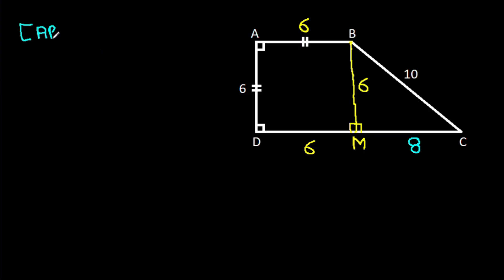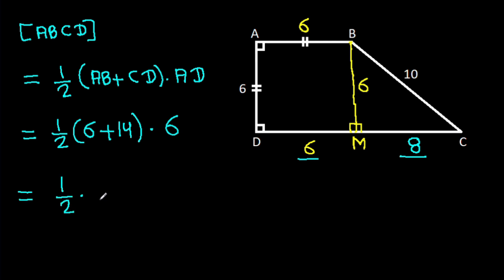Now, area of ABCD, it will be 1 over 2 times AB plus CD times height AD. And it is 1 over 2 times 6 plus 14 times 6. And 2 times 10 is 20. So, it is 10 times 6, that will be 60.